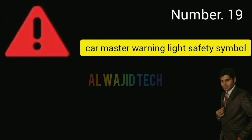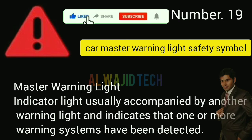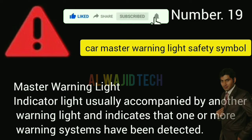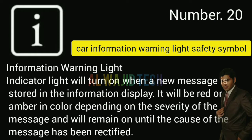Number nineteen: Car master warning light. The master warning light indicator is usually accompanied by another warning light and indicates that one or more warning systems have been detected.